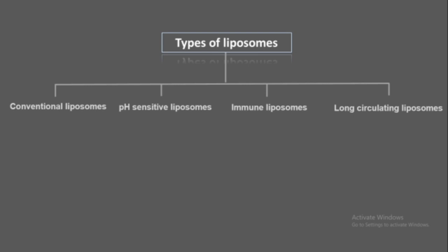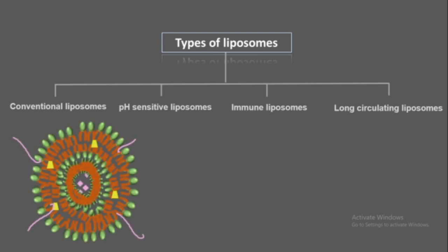Immunoliposomes, which are loaded with targeted antigens or antibodies, allow specific delivery of drugs. Because liposomes can also be cleared from our system, efforts have been made to improve circulation efficiency by modifying the surface with a polymer like PEG — polyethylene glycol — which increases the circulation time.